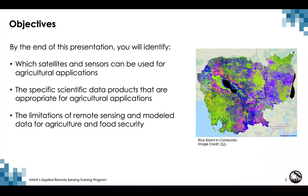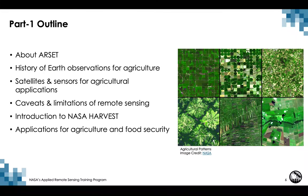The following are the objectives for Part 1 of this webinar series. By the end of this presentation, participants will identify which satellites and sensors can be used for agricultural applications, specific scientific data products appropriate for agricultural applications, and the limitations of remote sensing and model data for agriculture and food security. The outline covers a brief background on the ARSET program, a historical timeline of Earth observations for agriculture, specific satellites and sensors, caveats and limitations, an introduction to the NASA Harvest program, and applications of satellite remote sensing for agriculture and food security.